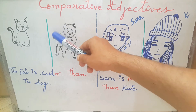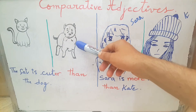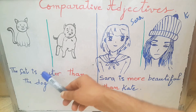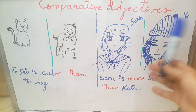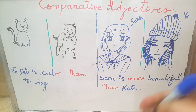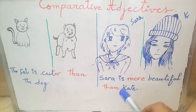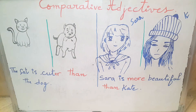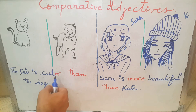As you can see here, I want to compare between the cat and the dog using the adjective cute. I would say the cat is cuter than the dog. On your right I want to compare between Sarah and Kate using the adjective beautiful. I would say Sarah is more beautiful than Kate. So in the first example, cute is a short adjective, so I add an R.